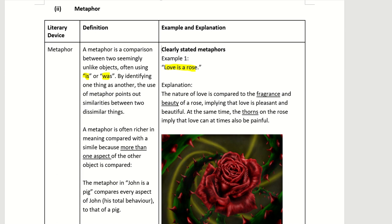So how would you craft the answer? You can craft the answer this way — for example: 'The nature of love is compared to the fragrance and beauty of a rose.'